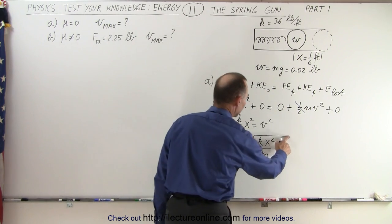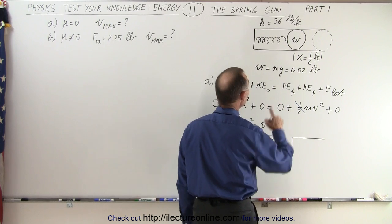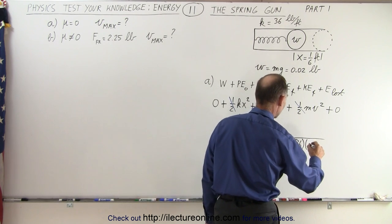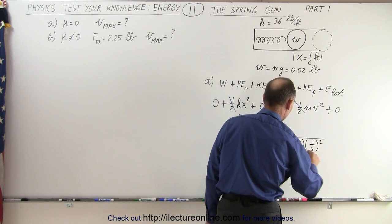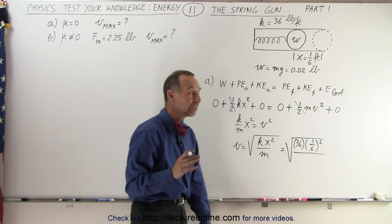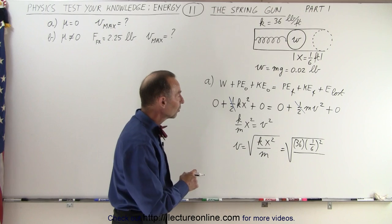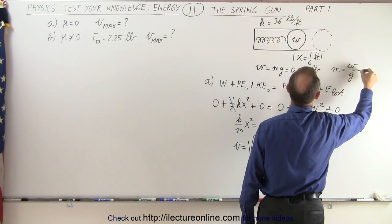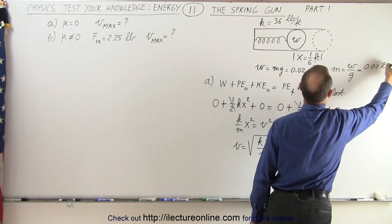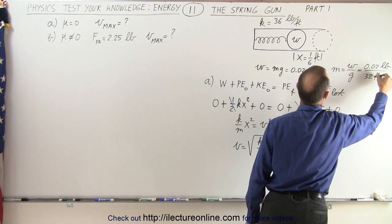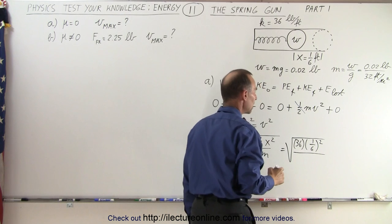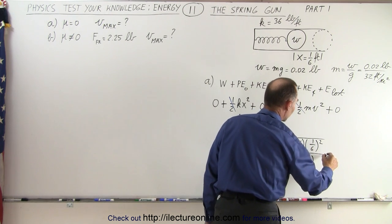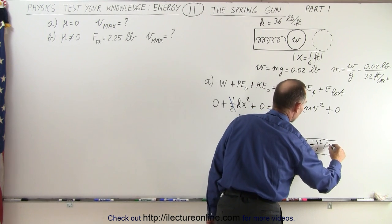Now what do we plug in there? Well, this is equal to the square root of k which is 36 multiplied times x which is 1/6, then we have to square that, so 1/6 squared, divided by the mass. Now notice we weren't given the mass, we're given the weight, so that means mass is equal to the weight divided by g, which is equal to 0.02 pounds divided by g which is 32 feet per second squared. So that means we need to plug in here 0.02 and then divided by g, which is the same as multiplying by g, so we'll put the g up here which would be 32.